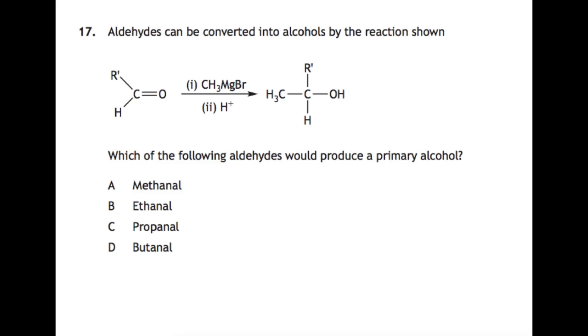Question 17. Aldehydes can be converted into alcohols by the reaction shown. They've given you a reaction that you've not seen before, but that doesn't matter because you can just use what you know and put it in. Which of the following aldehydes would produce a primary alcohol? A primary alcohol is one where your OH is on the end of the carbon chain. So you would want this R here to be an H. So if you want the R to be an H, the structure of the aldehyde that you would want would be this. And if that is what we want, then that would be methanal.